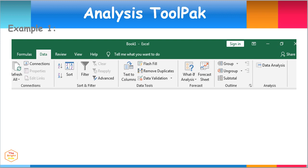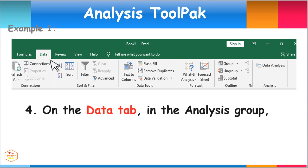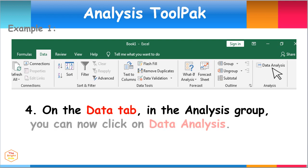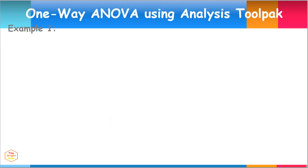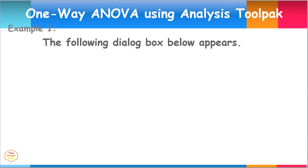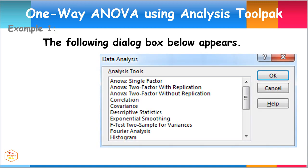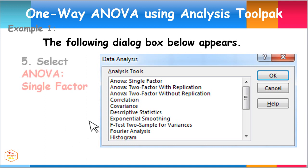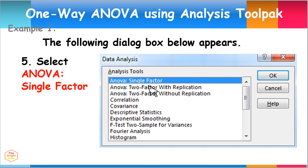Now that the ToolPak has been added, click on the Data tab menu. Then in the Analysis group found on the far right side of the menu, click on Data Analysis. After selecting the Data Analysis tab, the following dialog box appears. From the choices of different analysis tools, select ANOVA Single Factor and click OK.